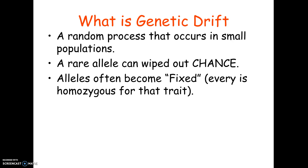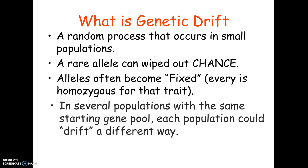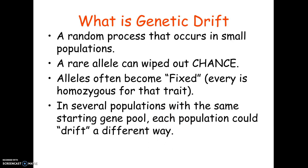An allele can become what's called fixed — meaning every single organism in the population is homozygous for that trait. Everybody might become big B big B, and the allele little b is gone from that population. You can actually have several populations that start off the same, become separated, and go through genetic drift in different directions, so that in a hundred years the two populations have gone through speciation — becoming two completely separate species — solely because of genetic drift, not because the trait was good or bad.